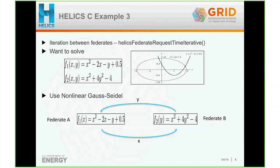We're using a nonlinear Gauss-Seidel method to solve the system of equations. The equations are split: the first federate has just the first equation and solves for variable X. Once it solves for X, it passes that value to the second federate. Federate B is solving the second equation and only solves for Y values. Once it solves for Y, it passes its updated value back to federate A. This back-and-forth is essentially the nonlinear Gauss-Seidel iterative technique.